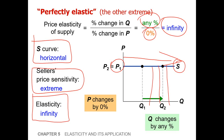That's it for this part. It's pretty straightforward — the same concepts as used in the case of demand. We have five different kinds of price elasticity of supply. Just go through it again and you will remember these price elasticities. Good luck with learning, and I'll see you in the next part.